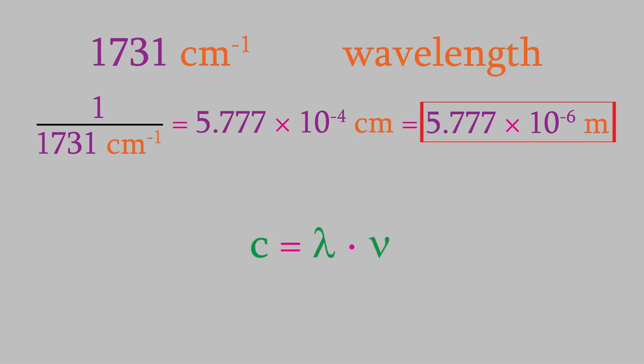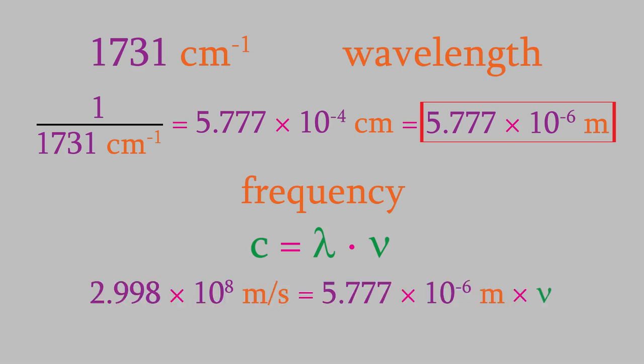Now we can use this equation to get the frequency. As you might remember, c is the speed of light, which is 2.998 times 10 to the eighth meters per second. That gives us a frequency of 5.190 times 10 to the 13th seconds to the minus 1.